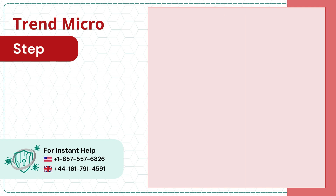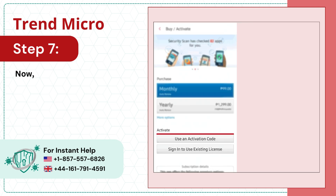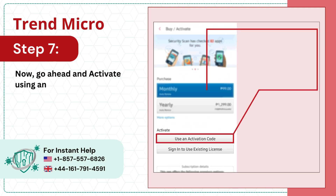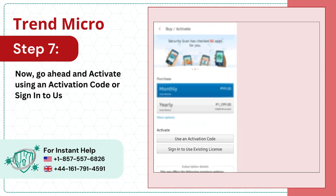Step 7: Now go ahead and activate using an activation code, or sign in to use an existing license.